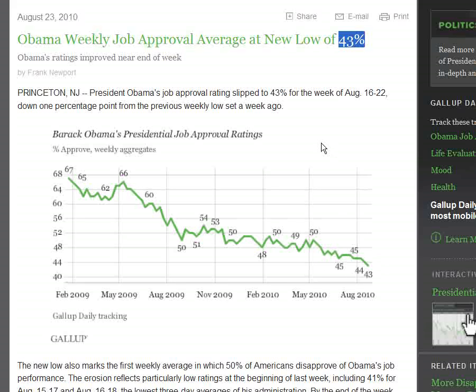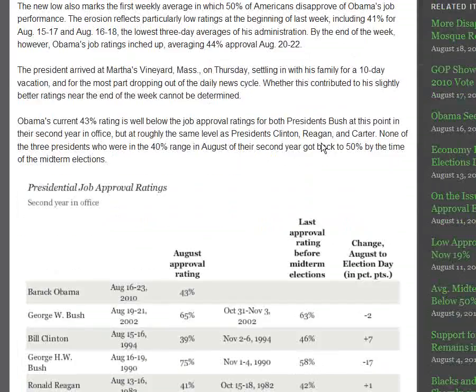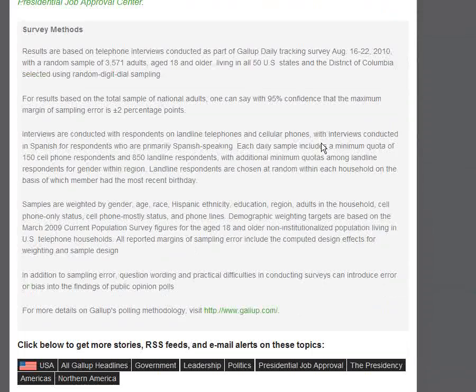Let me show you where at the end of this survey they explicitly talk about the inferential statistics. They tell us about their survey methods, and they had a random sample of 3,571 adults aged 18 and older living in 50 states and Washington, D.C. And they tell us this is really where the probability comes in, and the inferential statistics.